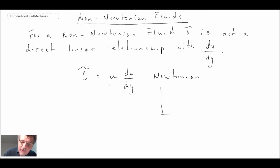And so you can imagine if you were to plot tau versus du by dy, you would have a linear relationship. Well, for non-Newtonian fluids, you don't have a linear relationship. And so there are different types of fluids that exist with different characteristics.